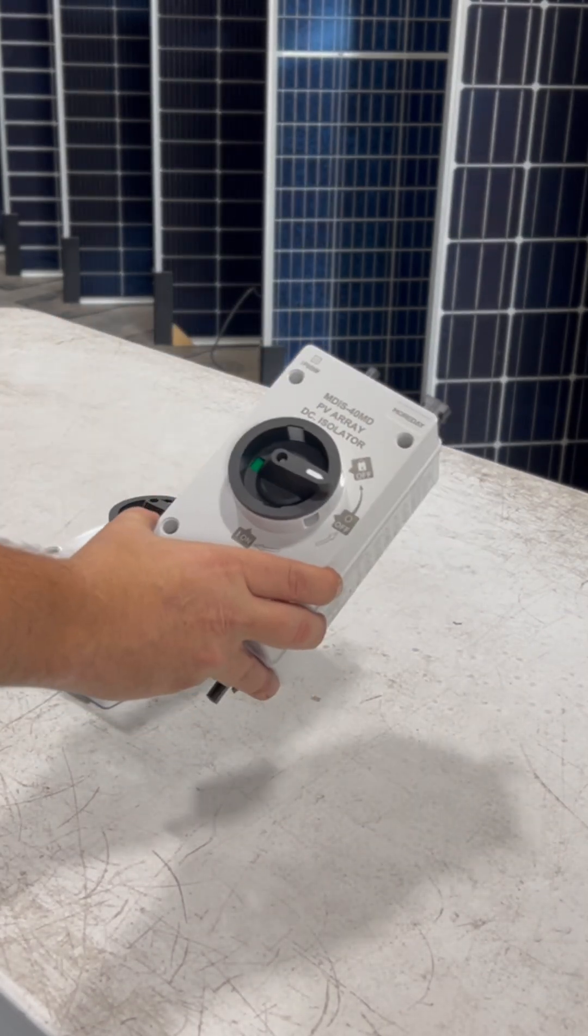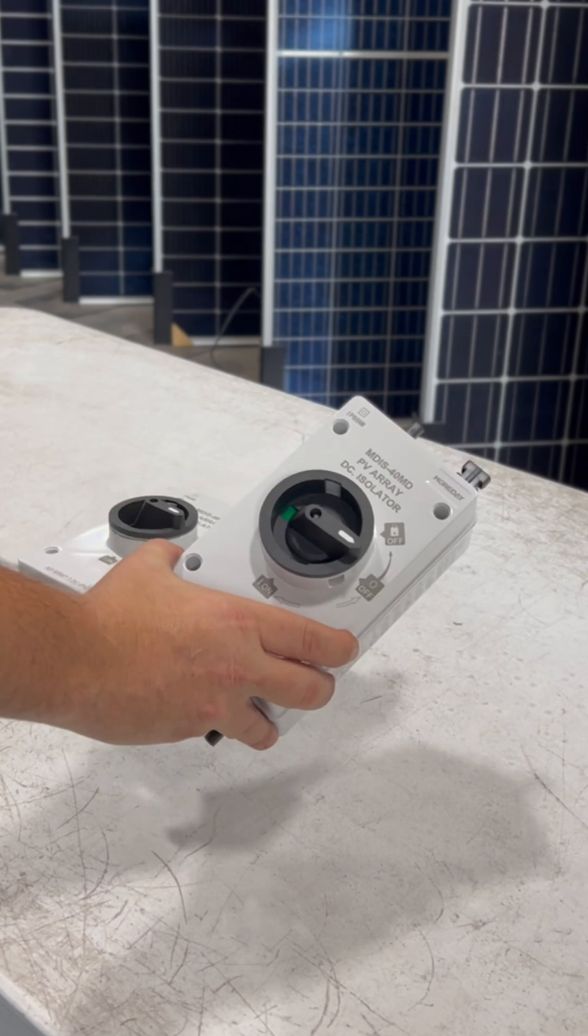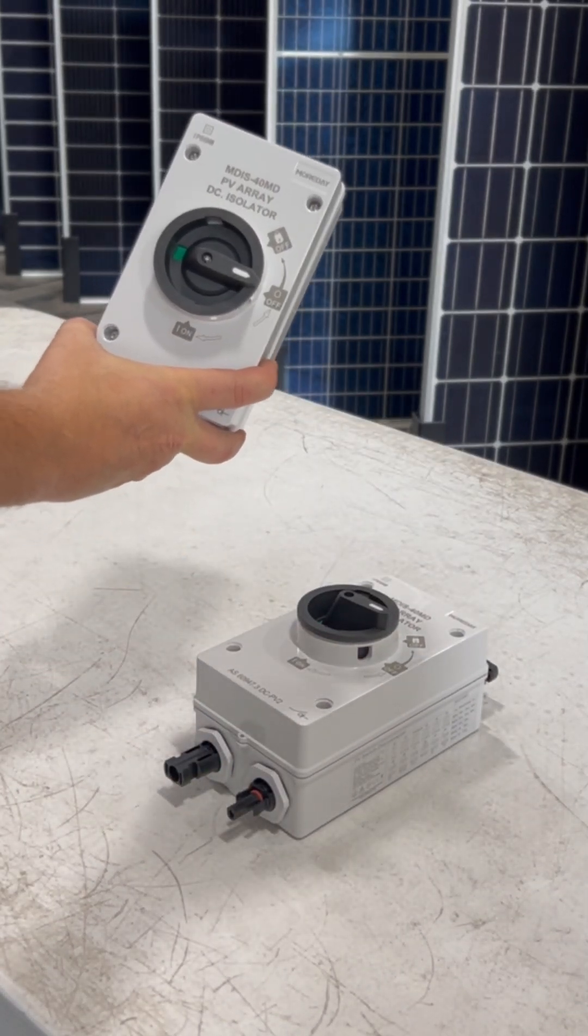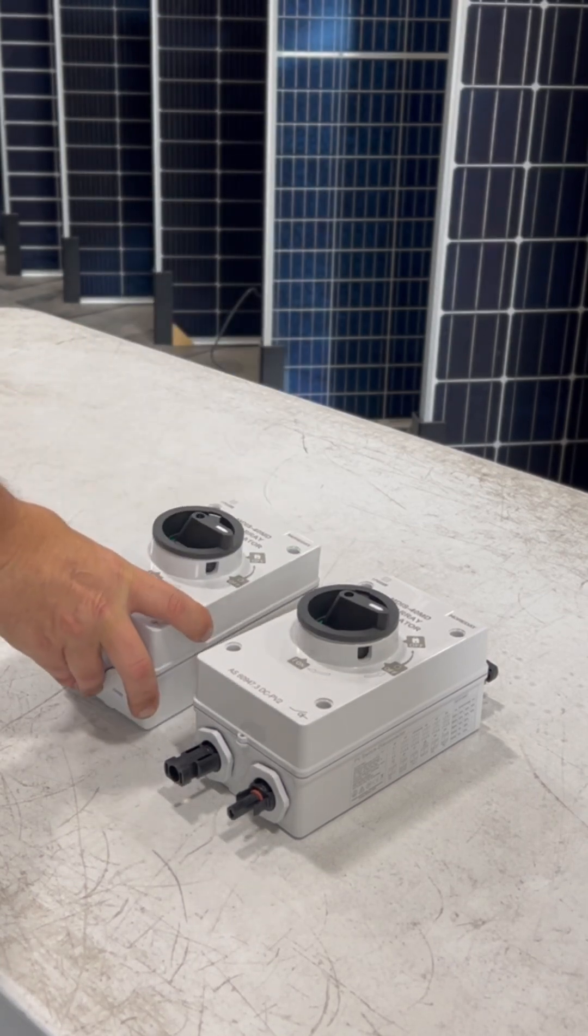The MC4 style is convenient when working with mini splits or any installation where you're not running conduit. If you're running conduit, you'll need the other style of disconnects, which we will cover in the next video.